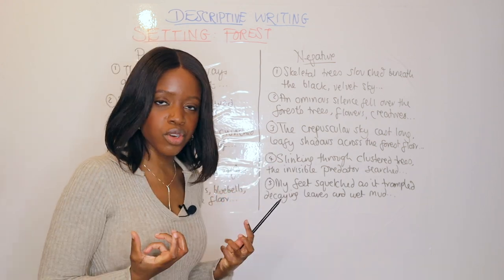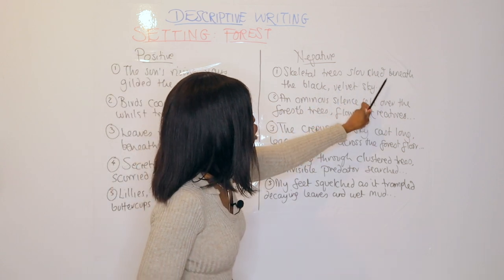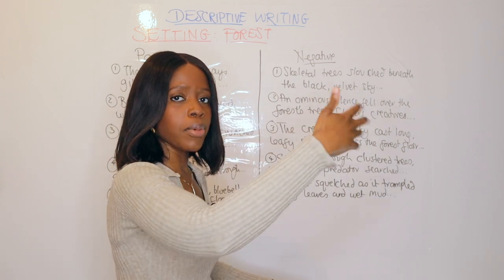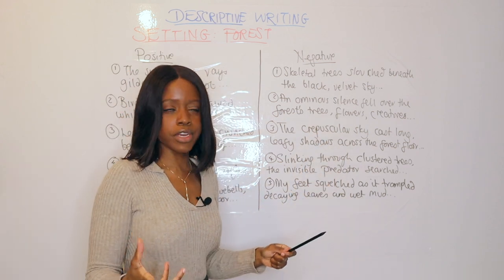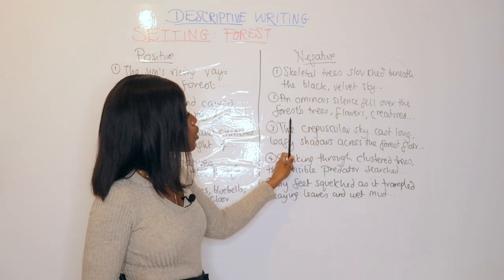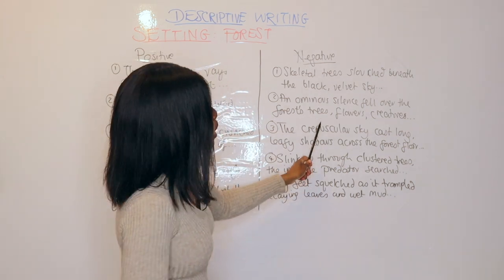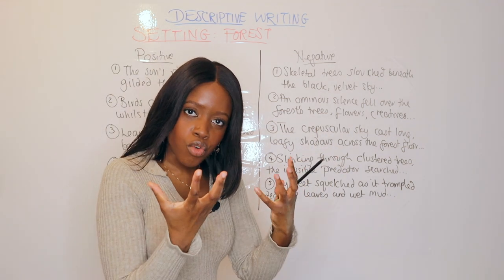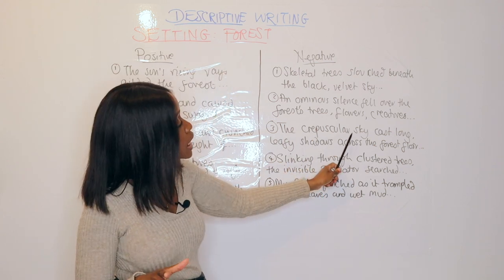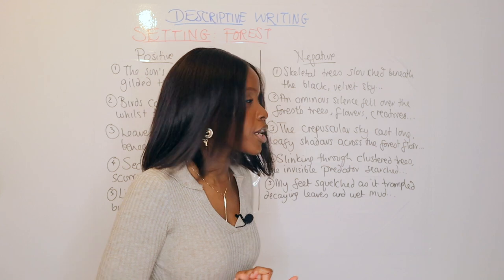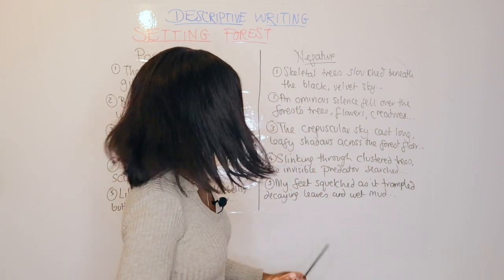Now for negative phrases to commit to memory. Starting with negative pathetic fallacy: 'Skeletal trees slouched beneath the black velvet sky as...' — this illustrates a completely nighttime, dark forest. The second phrase: 'An ominous silence fell over the forest, trees, flowers, creatures, as something else was happening.' This creates a really ominous atmosphere using listing. The third phrase — 'crepuscular' means twilight, the period just before darkness — so: 'The crepuscular sky cast long leafy shadows across the forest floor...'